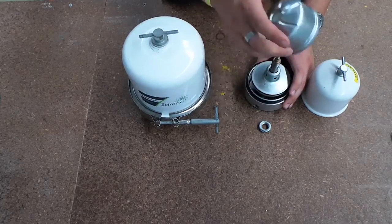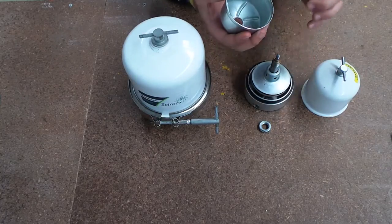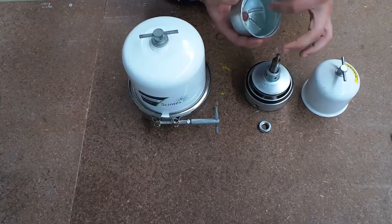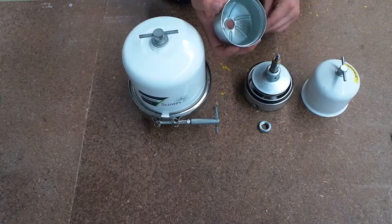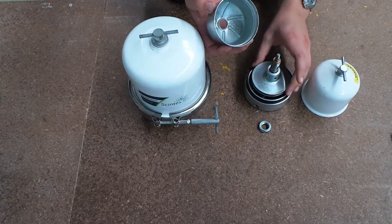Once the nut is removed, the catchment container can also be removed. From here you can scrape out all the dirt and grime that is built up there through the filtration.